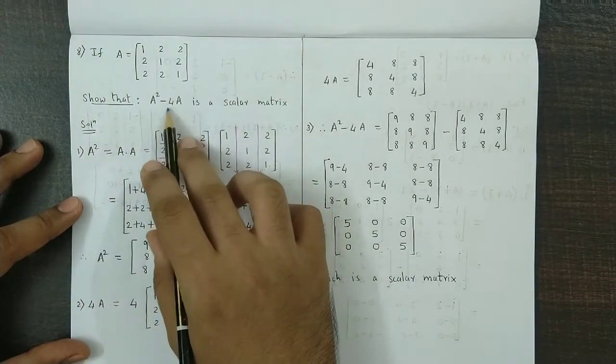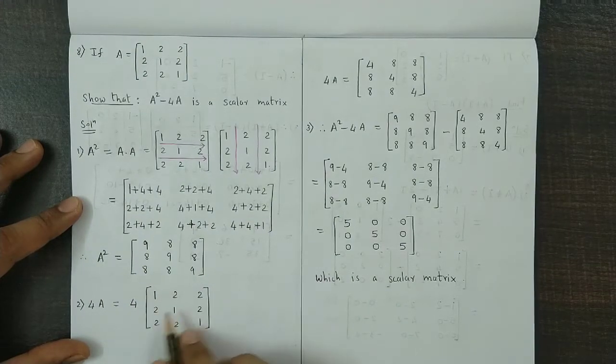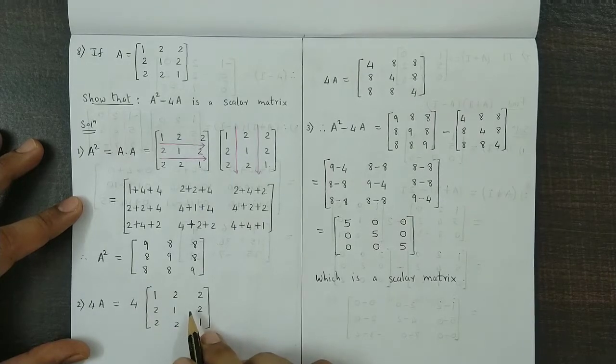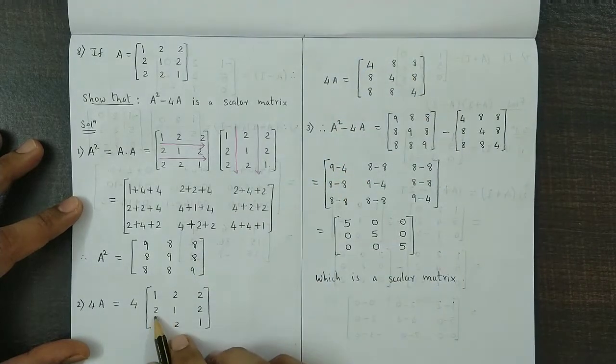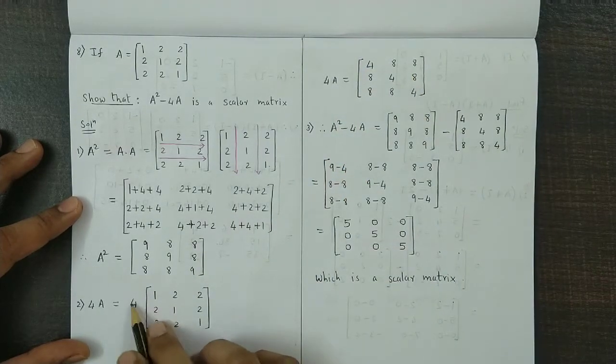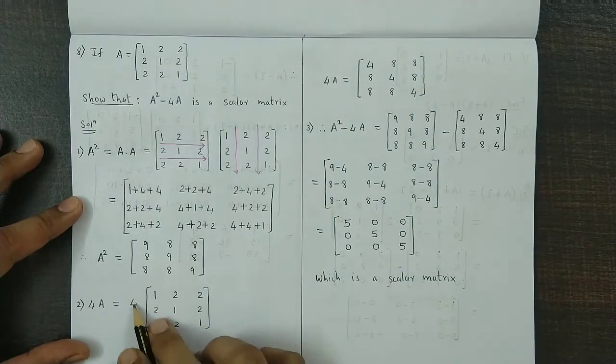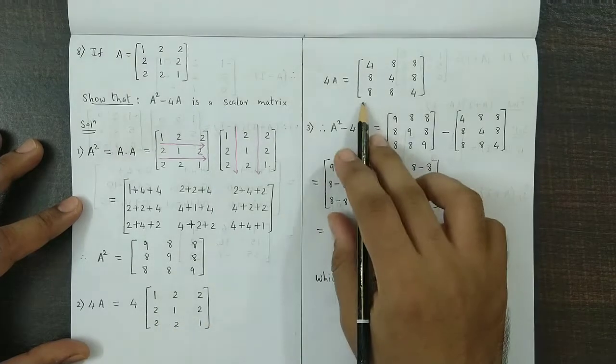Next we obtain 4 times A. So 4 times matrix A, that is 4 times 1, 2, 2, 2, 1, 2, 2, 2, 1. Now performing the scalar multiplication we get 4, 8, 8 in the first row. Then 8, 4, 8 in the second row. And 4 multiplied by the third row, so it will be 8, 8, 4.